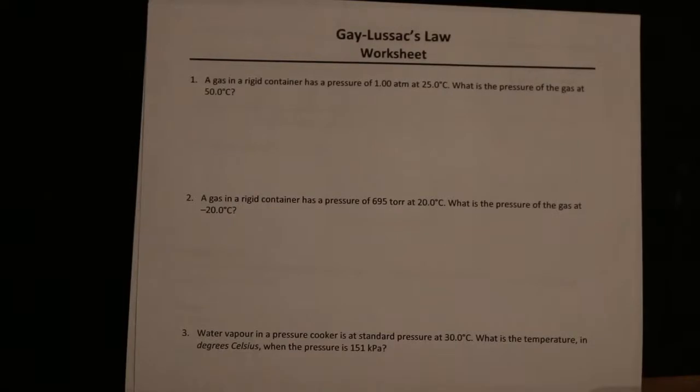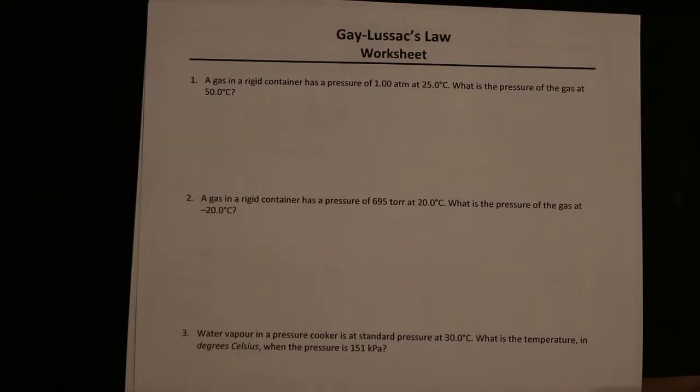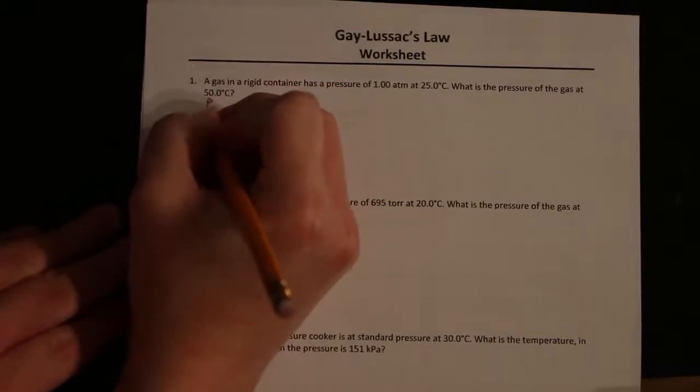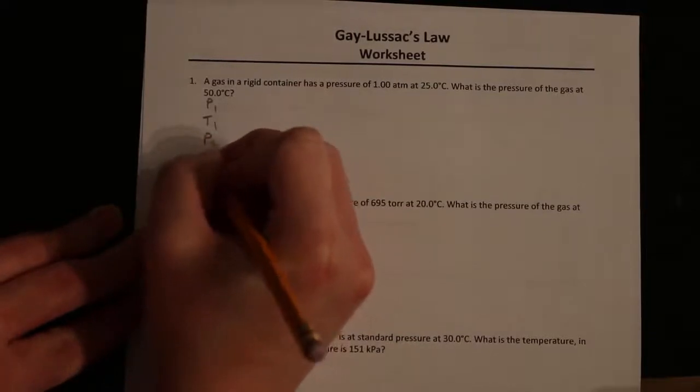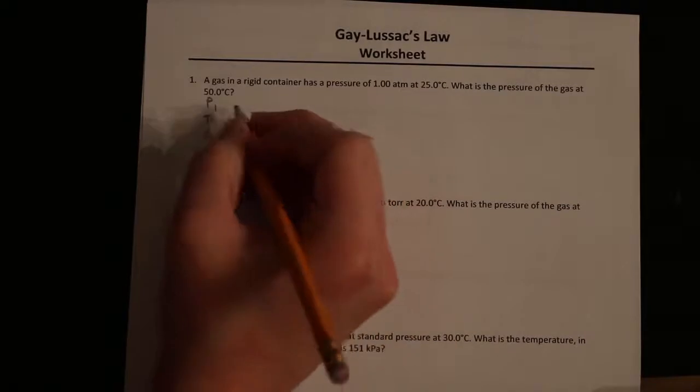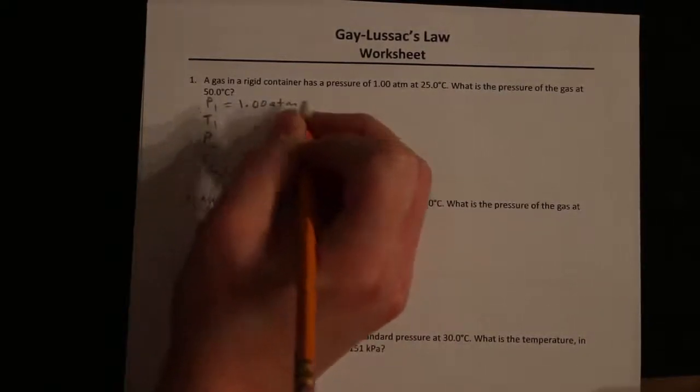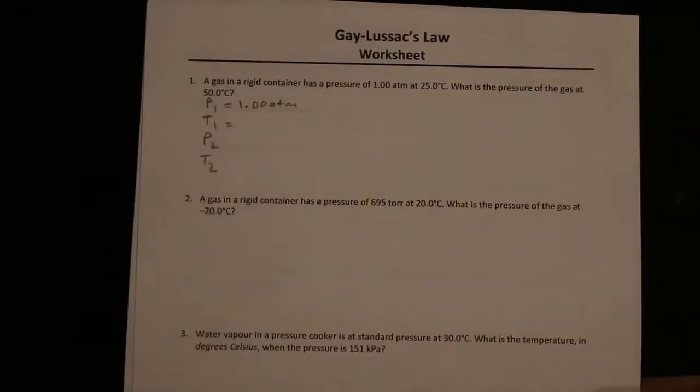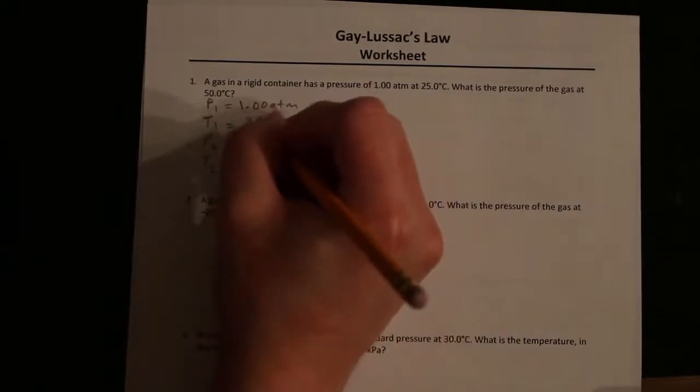Let's do a few more examples. This is on page 36. Question number 1 says: A gas in a rigid container has a pressure of 1.00 atm at 25 degrees Celsius. What is the pressure of the gas at 50 degrees Celsius? Again, we write down our four variables. P1, T1, P2, T2. Our initial pressure is 1.00 atm. Initial temperature is 25 degrees Celsius. To go from Celsius to Kelvin, we add 273. So 25 plus 273 gives us 298 Kelvin.